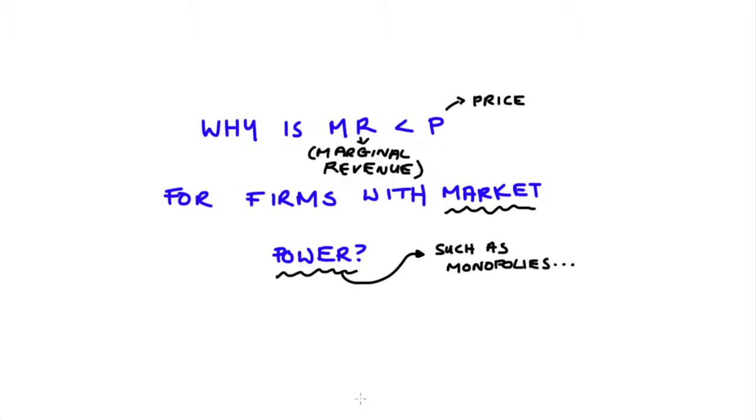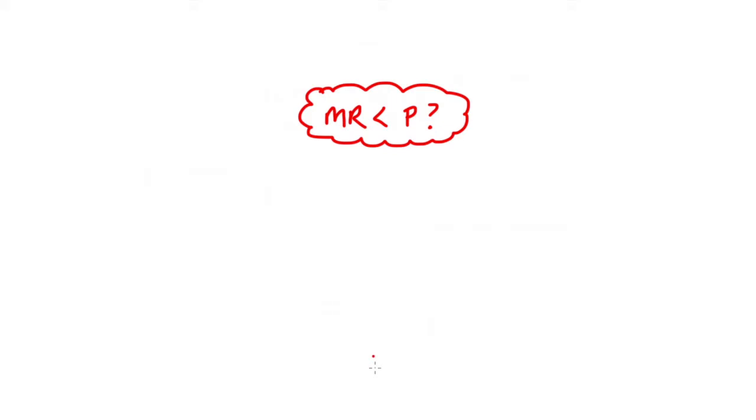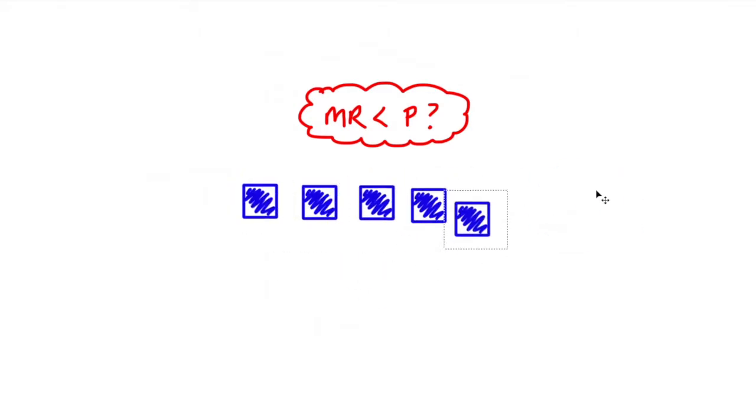In order to discuss the reasons why we say MR is less than P for firms with market power, I'm going to offer a very simple discrete example — I won't use functions. In my example, let's pretend I'm a producer and I'm going to be selling boxes — blue boxes, because they're easy to draw on the screen. Let's say initially I am producing five blue boxes at a price of $30 each.